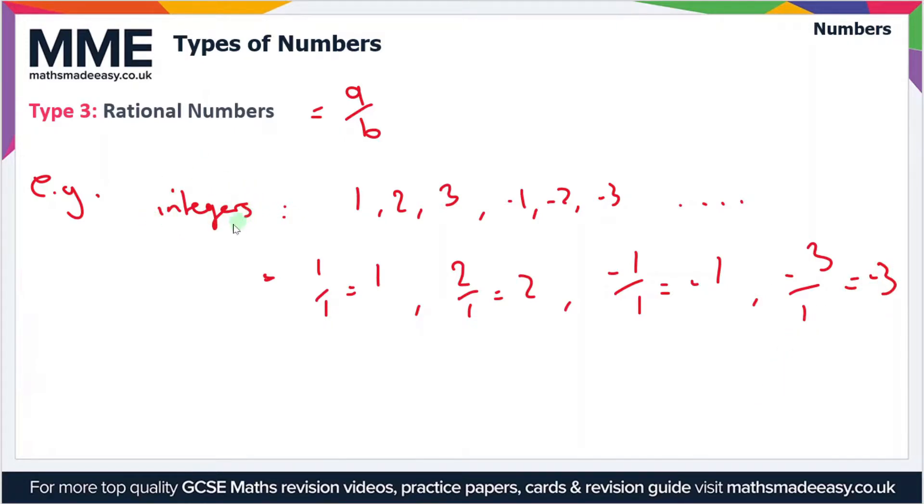Any integer can be expressed as a fraction, therefore it is a rational number. What about decimals? Decimals can either be recurring or non-recurring. Let's look at a non-recurring decimal, for instance 0.25. We can express this as a fraction because this equals one quarter.